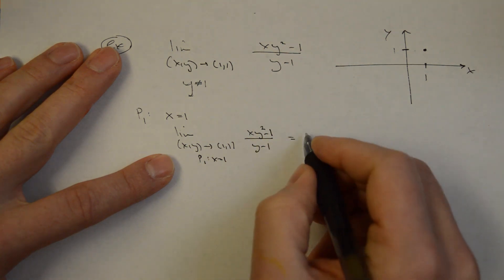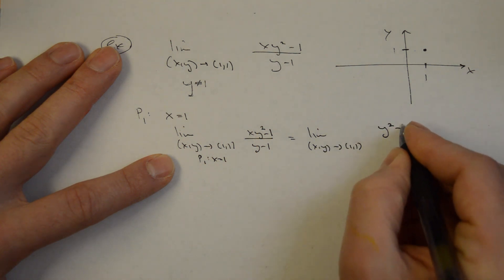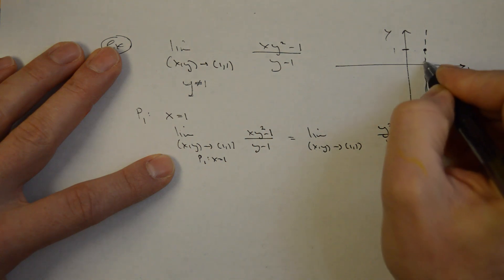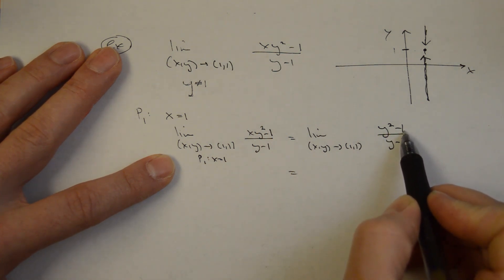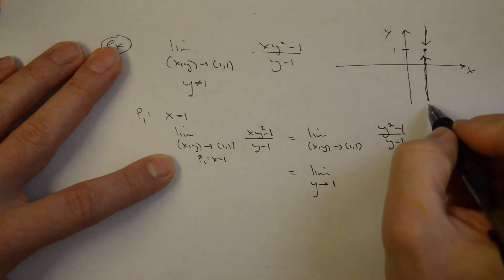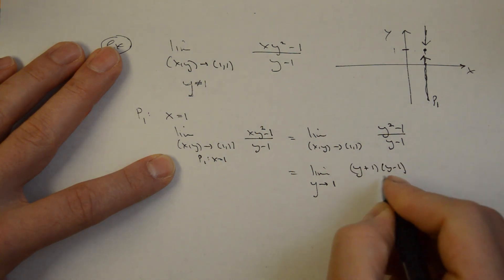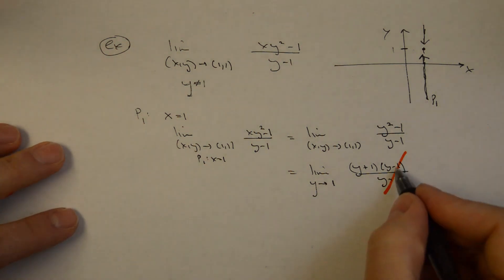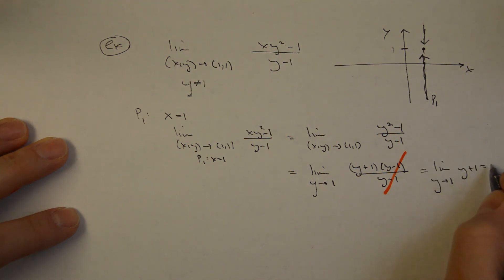Substituting x=1 reduces this to the single-variable limit as y→1 of (y²−1)/(y−1). Factoring the difference of squares gives (y+1)(y−1)/(y−1), and the removable singularity cancels. This becomes the limit as y→1 of (y+1), which equals 1+1 = 2.